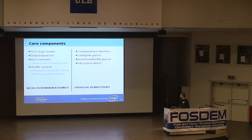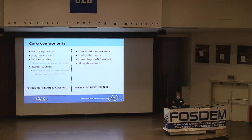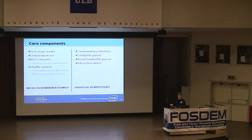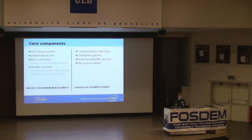The components of the core that will always need to be in assembly are the first stage loader, disk and network I/O, the BIOS extender which gets us into protected mode, and the shuffle system that makes all the memory magically end up where it should be. These are core platform support things and will always need to be in assembly, if nothing else for size. However, the command line interface, config file parser, kernel loader and parser, and most importantly the file system drivers have no business being in assembly and need to be rewritten in C. This is about 80–85% of the size of the current core, so the assembly portion is really a very small portion.